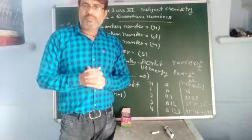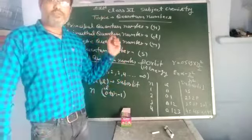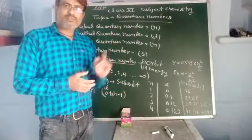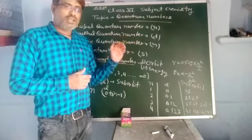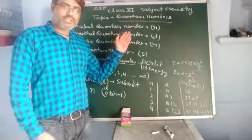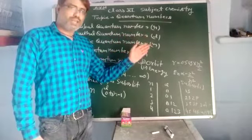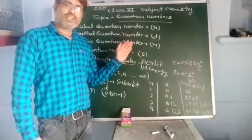There are four quantum numbers. First is principal quantum number, denoted by small n. Second is azimuthal quantum number, denoted by small l. Third is magnetic quantum number, denoted by small m. And last one is spin quantum number, denoted by small s.